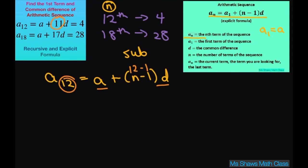And that's where this is coming from. This number will always be one less than this number. So that's how I already set this up. You have a list of numbers where the 12th term is 4 and the 18th term is 28. We want to find the first term and common difference because that's going to help us write the recursive and explicit formula.